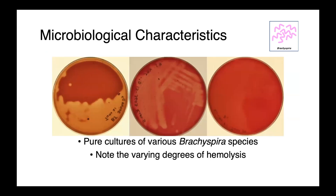Brachyspira typically do not produce colonies on solid media, which you can appreciate in these three plates. They're also notable for their production of hemolysins, which are variably active — different species produce varying degrees of hemolysis. We can see very strong beta hemolysis on the left, intermediate hemolysis in the center, and a very weakly beta-hemolytic strain on the right. Classically, Brachyspira species have been described based on the strength of hemolysis, but this relationship doesn't associate perfectly with phylogeny.